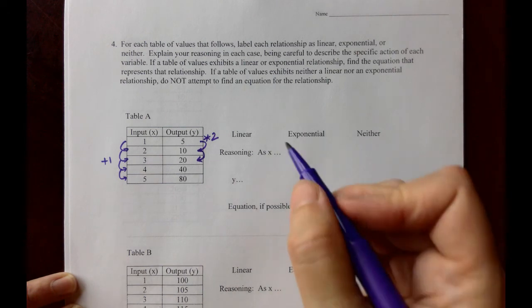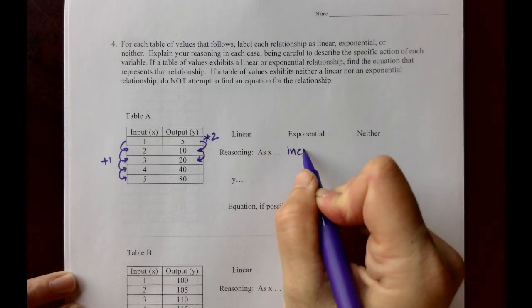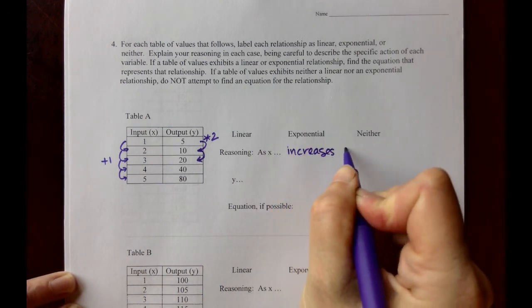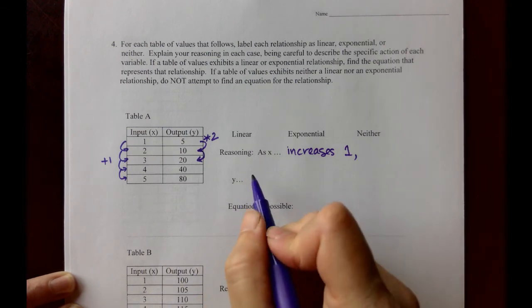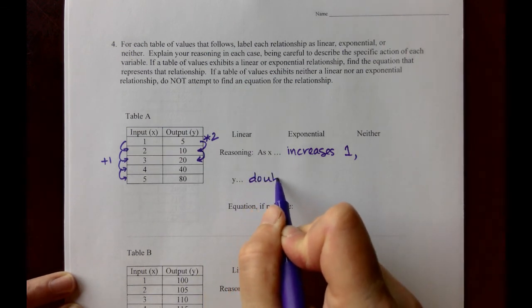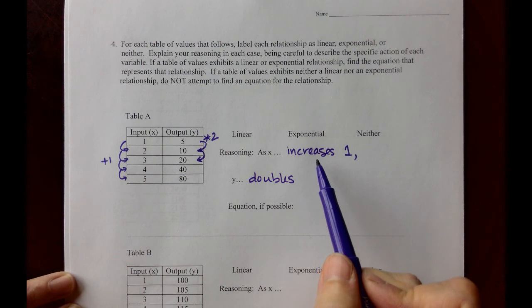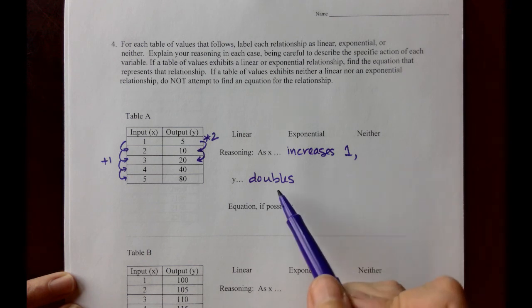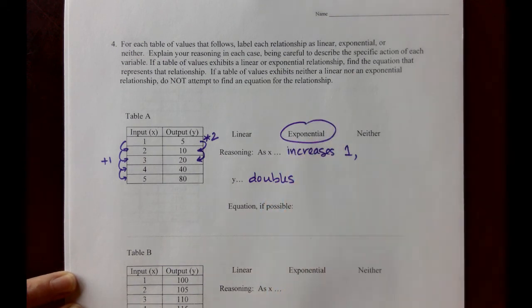We can write the reasoning right now. As x increases 1, y doubles or multiplies by 2. Since we have an addition pattern in the x's, a consistent addition pattern in the x's corresponding to a consistent multiplication pattern in the y's, we have an exponential relationship.